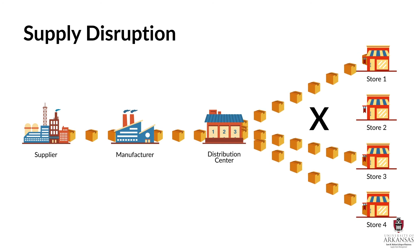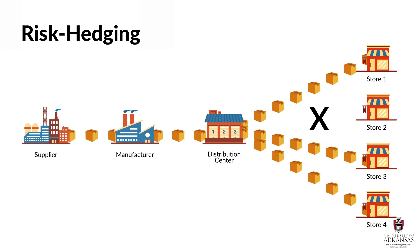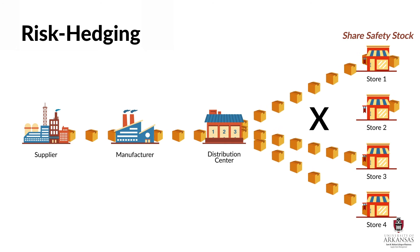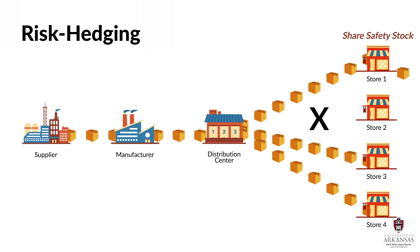What can a supply chain manager do? A risk hedging strategy is all about sharing and pooling resources to minimize supply disruptions. Store level inventories are part of that same network of shared resources. So there are times when one store may transship some of its extra inventory to another store that is in need of that inventory due to a supply disruption. Although transshipping increases costs by moving the product again, it can be an effective way to address individual store level supply disruptions.